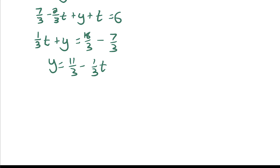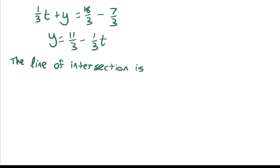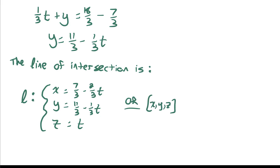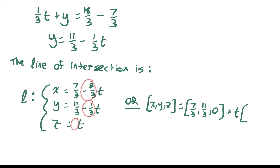So the parametric equations of the line of intersection are: z = t, x = 7/3 - (2/3)t, y = 11/3 - (1/3)t. The corresponding vector equation is: (x, y, z) = (7/3, 11/3, 0) + t(-2/3, -1/3, 1). The direction vector should be simplified — no fractions. Multiplying the direction vector by 3 gives a final answer of (x, y, z) = (7/3, 11/3, 0) + t(-2, -1, 3). That is our line of intersection.